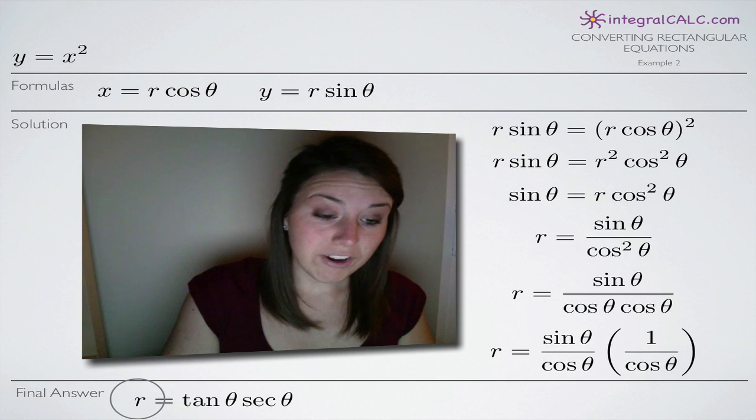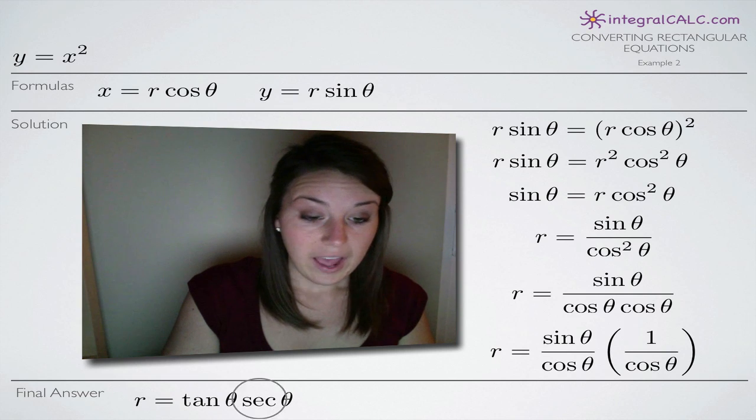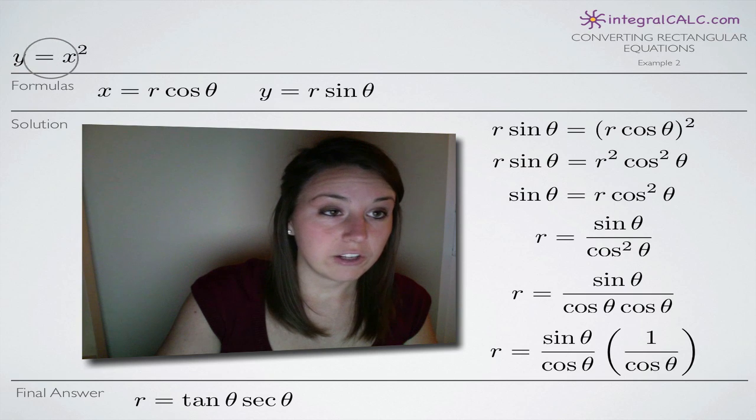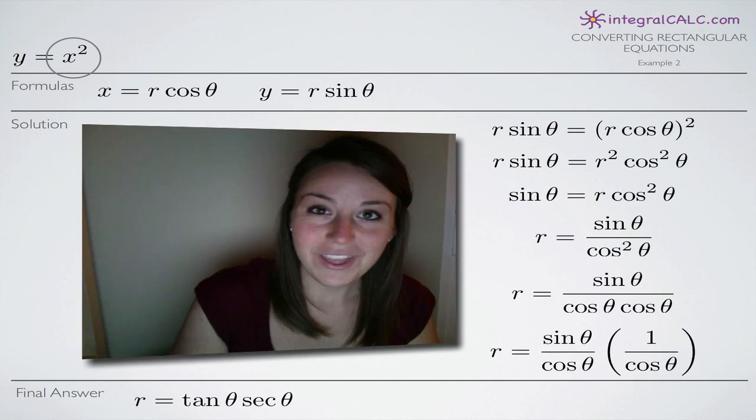So that's our final answer for the polar equation. It's solved for r in terms of theta and this polar equation here is equal to this rectangular equation y equals x squared. So I hope that helped you guys and I'll see you in the next video. Bye!